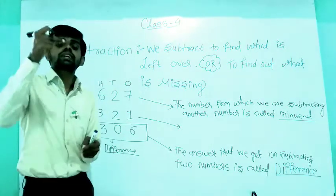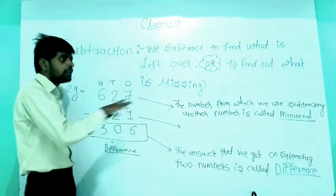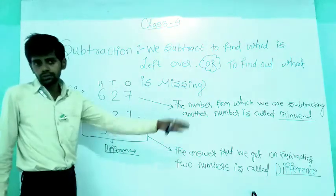The number from which we are subtracting — the one we do subtraction from — that is called the minuend.